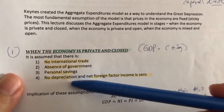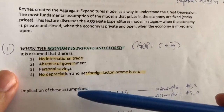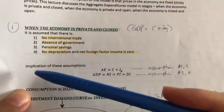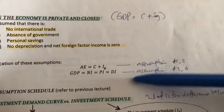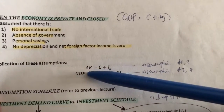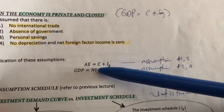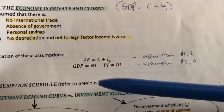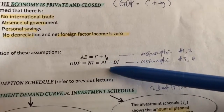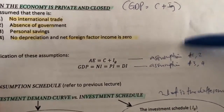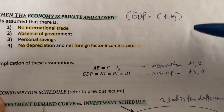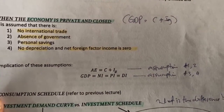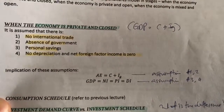The effect of all these assumptions is: by assumptions one and two, aggregate expenditure is effectively only consumption and private investment. With assumptions three and four, we can assume that GDP is equivalent to national income, personal income, as well as disposable income. A lot of this is explained in the text in more detail. During the virtual lecture, I'm just going to explain the important points, so for further elaboration please refer to the text.